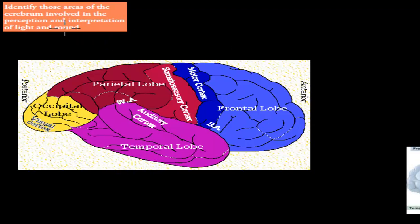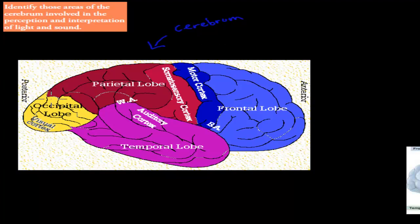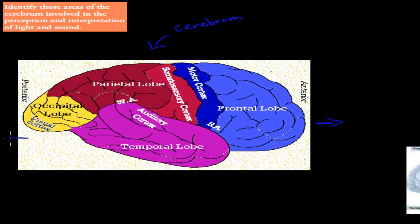These four lobes are all part of the cerebrum. I've now removed the medulla oblongata and the cerebellum — this is just the cerebrum. You can see the four lobes: the occipital lobe, the temporal lobe, the frontal lobe, and the parietal lobe. The frontal lobe is at the front of your brain, this would be the back of your skull, this would be the top, and this would be the bottom.